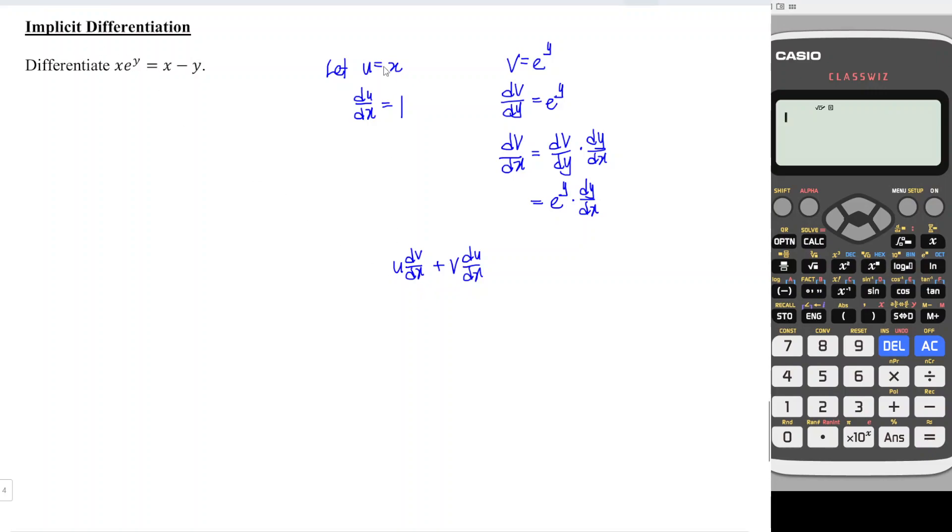u is x, dv/dx is e^y(dy/dx), plus v is e to the power of y, du/dx is 1. So this is the left hand side.